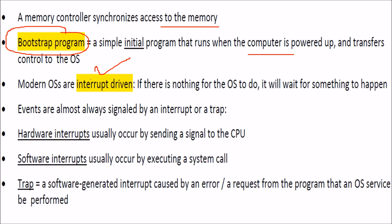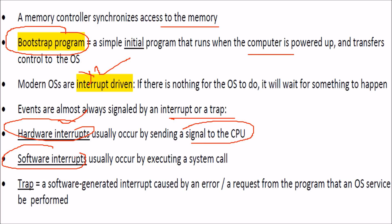Events are almost always signaled by an interrupt or a trap. Hardware interrupts occur by sending a signal to the CPU; software interrupts occur by executing a system call. A trap is a software-generated interrupt caused by an error or a program requesting OS attention — essentially a program saying it is in trouble and needs the OS to respond.